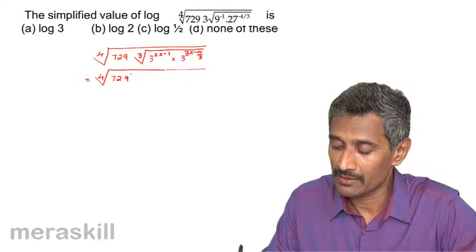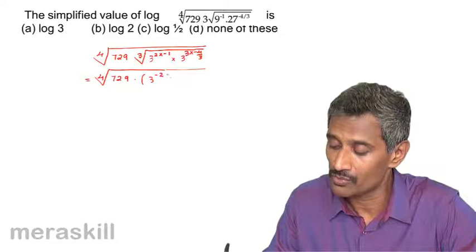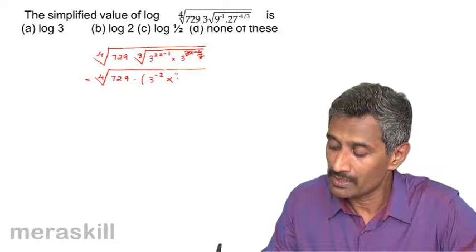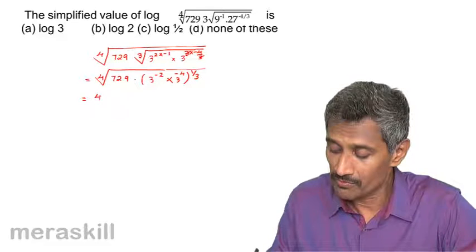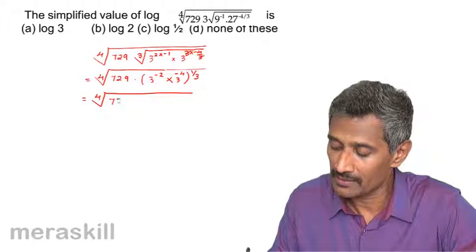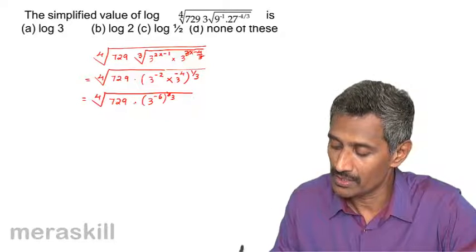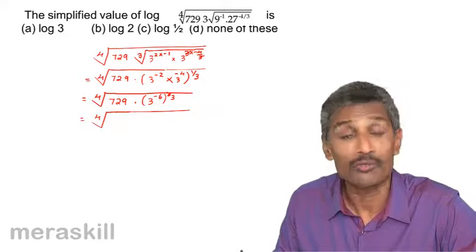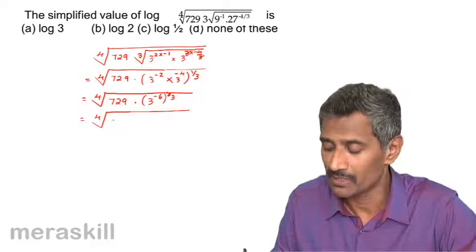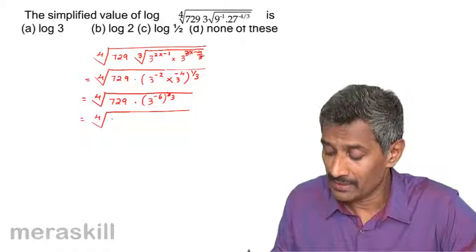We can write this as raised to 1 by 3 if we want — 3 raised to minus 2 into 3 raised to minus 4 the whole raised to 1 by 3. This gives fourth root of 729 into 3 raised to minus 2 plus minus 4, which is minus 6, the whole raised to minus 6 by 3.